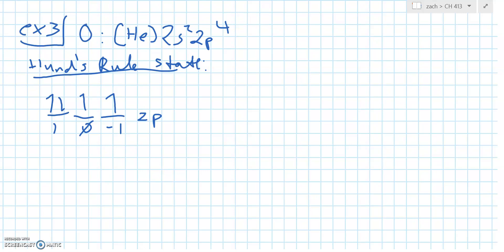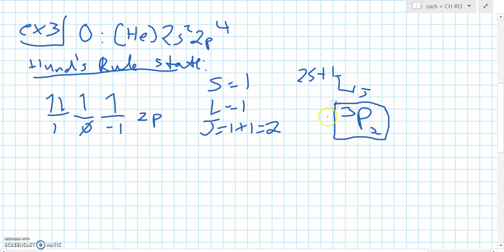So what would the term symbol be for this? Just maybe think about it for a second for yourself, and then we'll come back. So we thought about this, and we see that the spin, the S, is equal to 1. We see that L is also equal to 1. But since it's more than half full, J is equal to the sum of both of them. So we see that our term symbol for this, we use again this formula. We see that our term symbol has to be 3P2.